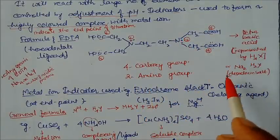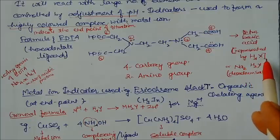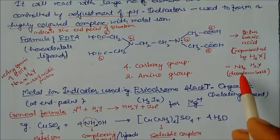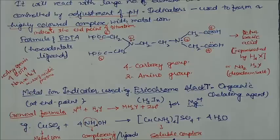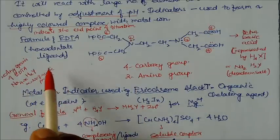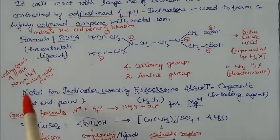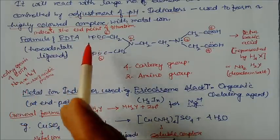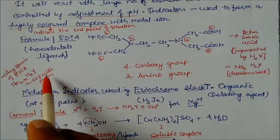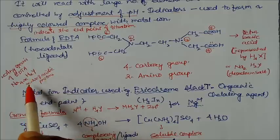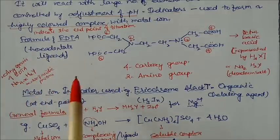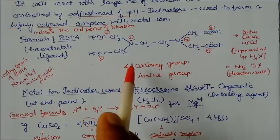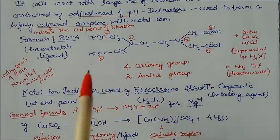EDTA is normally written in the form H₄X. When sodium is attached, we write Na₂ - the disodium salt. The general formula can be written as Na₄₋ₓHₓY, where x equals the number of acidic protons, which can be equal to four or less than four. This complexing agent reacts with the titrate to form a complex.